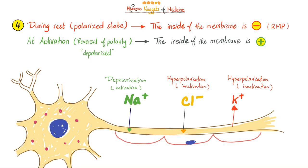Nugget number four: During rest, this is the resting membrane potential. The cell is in a polarized state, meaning the inside is more negative compared to the outside. During activation you have reversal of polarity. We call this depolarization or reversal of polarization. The inside of the membrane becomes positive because sodium is coming in. Sodium is positive. When sodium comes in, the inside becomes positive. This is the action potential depolarization.